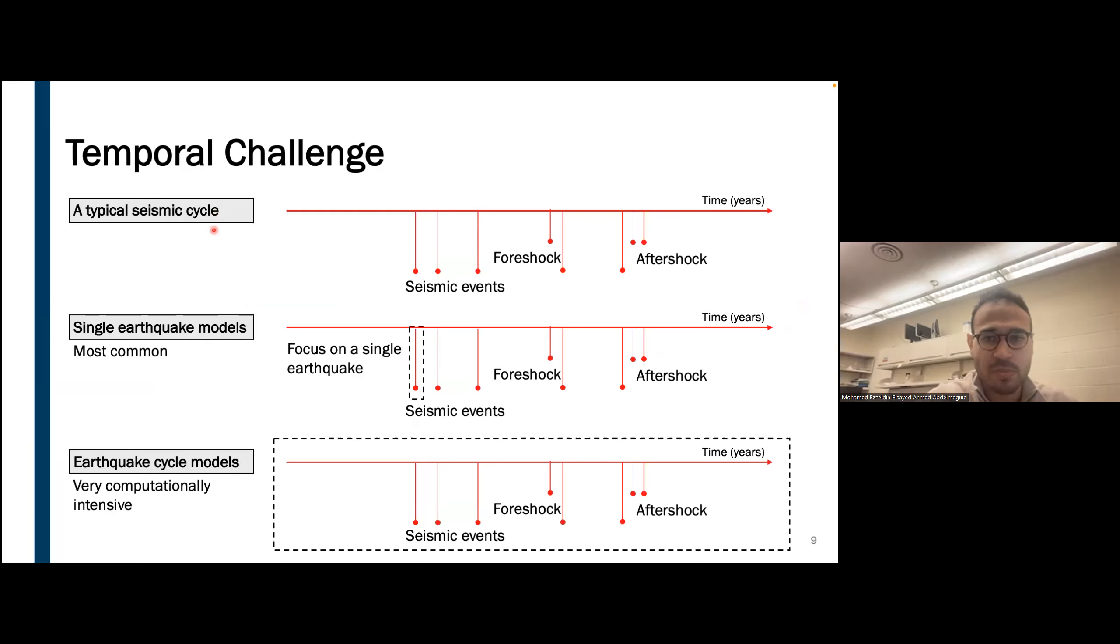To put things in perspective, here I'm plotting a typical seismic cycle, which consists of multiple events. Usually you have aftershocks, foreshocks, or main shocks. This cycle spans different time scales. Models up until recently have focused mainly on single earthquakes within the cycle. An alternative approach that has been gaining traction is modeling the entire cycle, but this also suffers from computational intensity. While the former is much more simple, we are aiming for the latter as it can provide more insight and predictive capability.